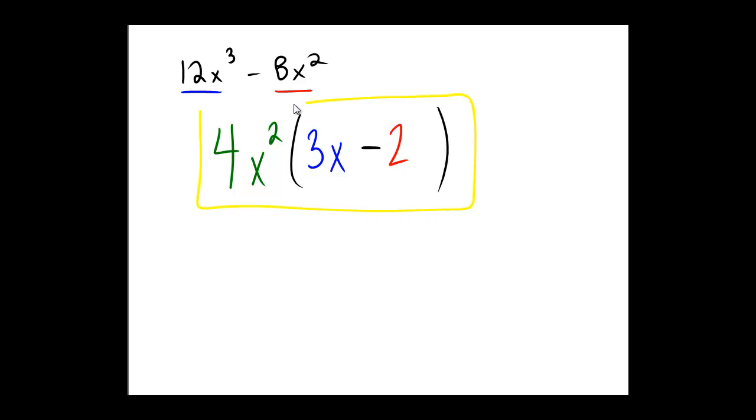So there is our final answer, and just to check it through the distributive property, 4x squared multiplied by 3x minus 4x squared multiplied by 2 would yield 12x cubed minus 4 times 2 is 8x squared. Notice this does match what we had to begin with.